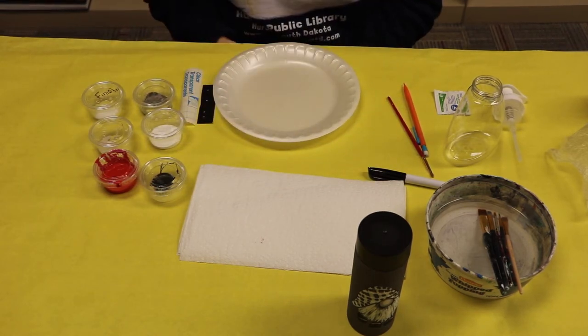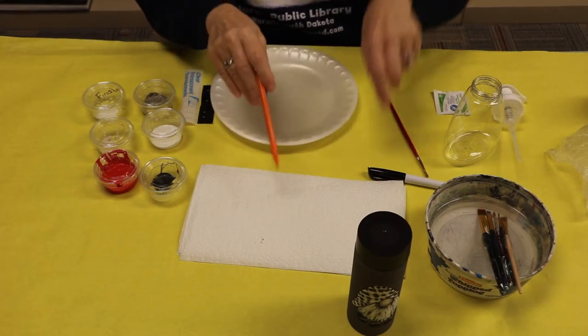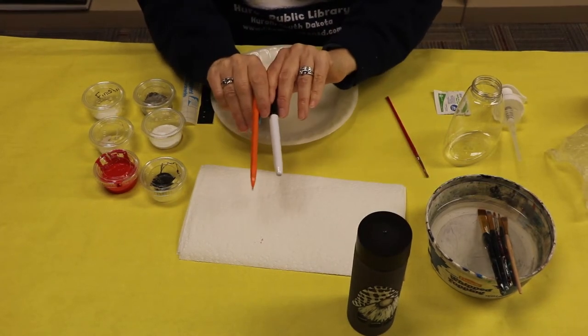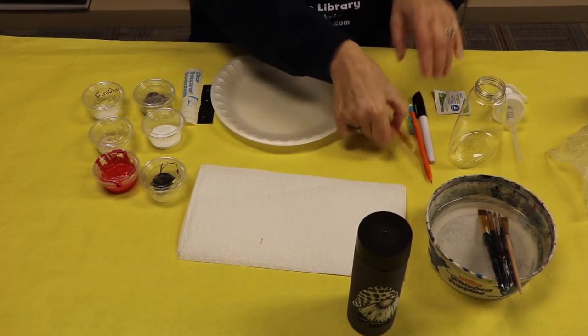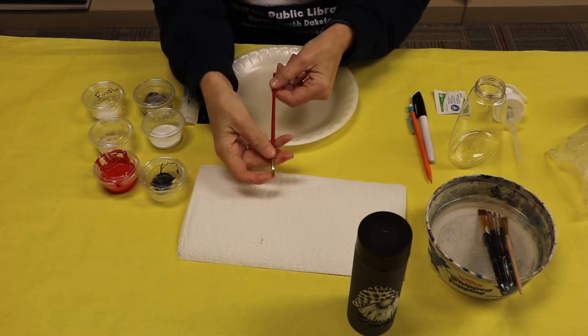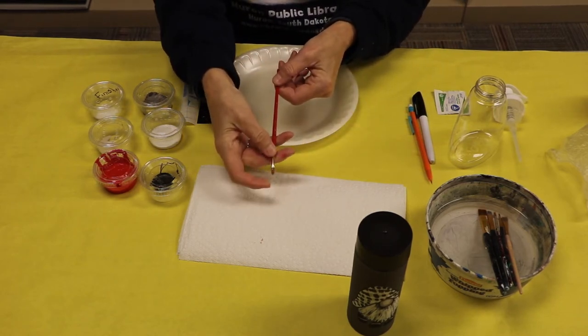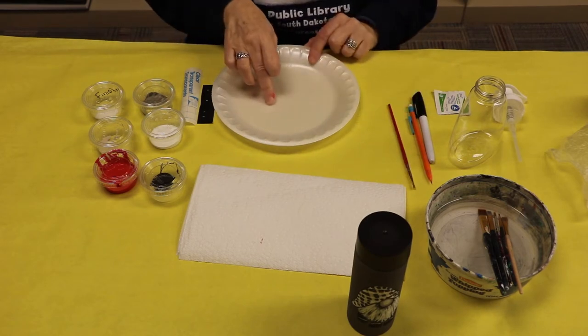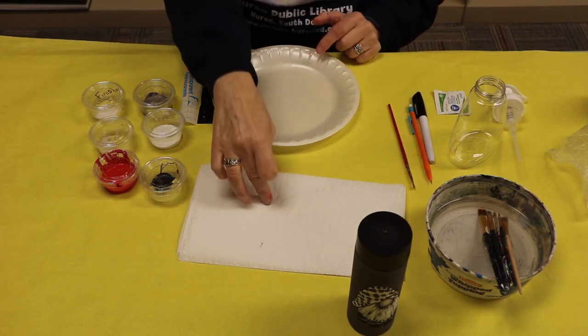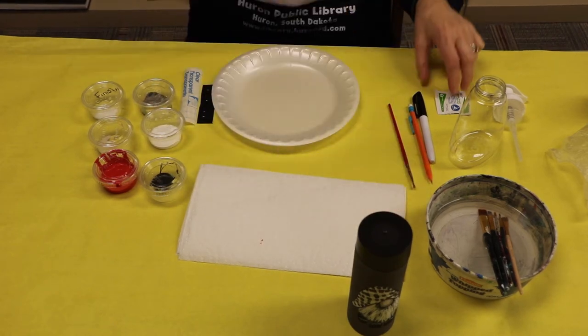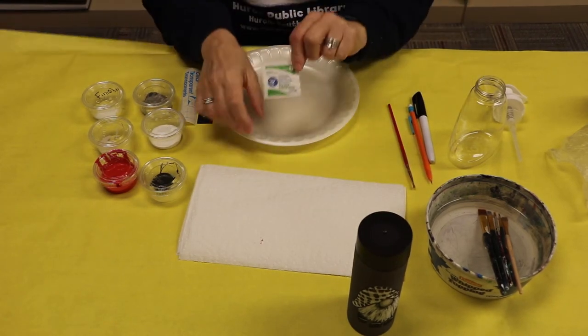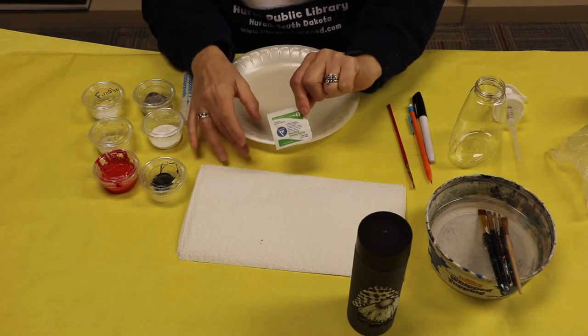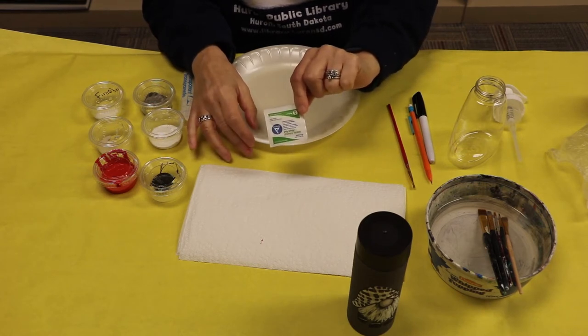You will need to supply a pencil, a black marker, paint brushes—I have a smaller paint brush for details and then a wider one. You will need a plate to mix your paint on, paper towels, water, and then an alcohol to wipe off your container to get it prepared.